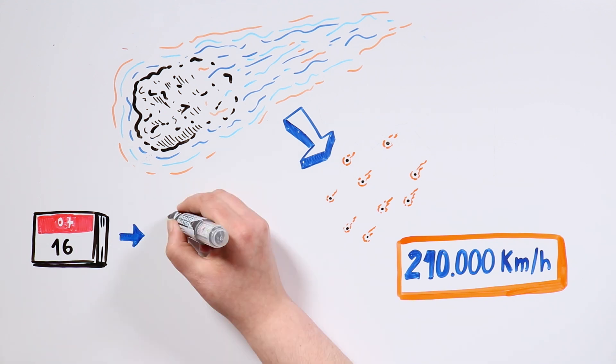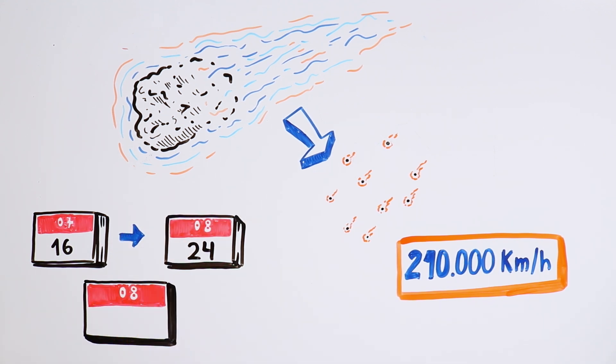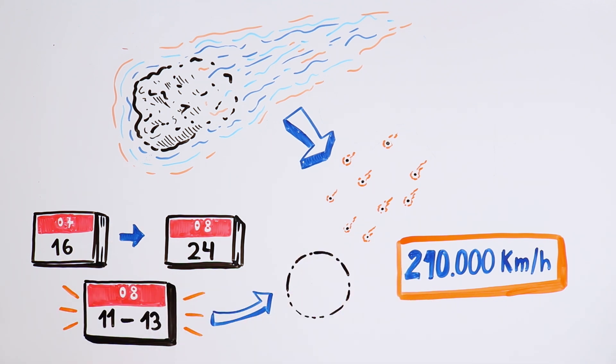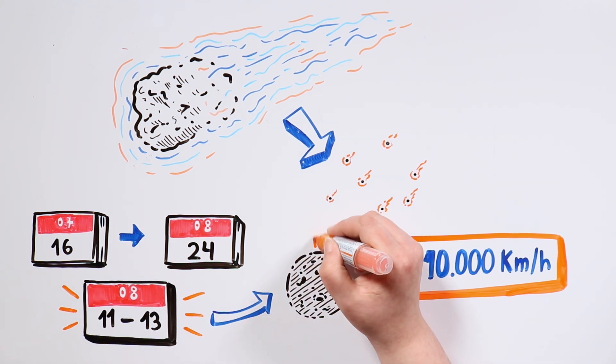They usually appear between July 16th and August 24th, although their highest period of activity and the best time to see them is between August 11th and 13th, especially if they coincide with the new moon.